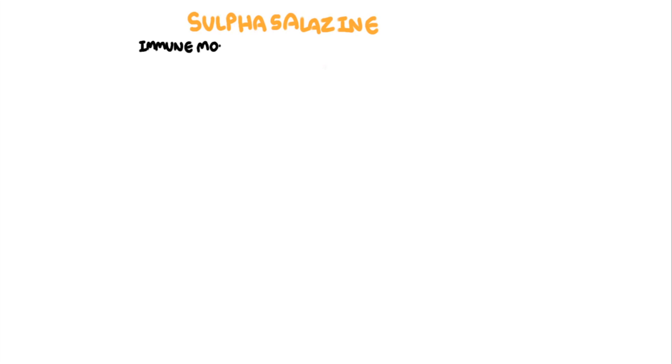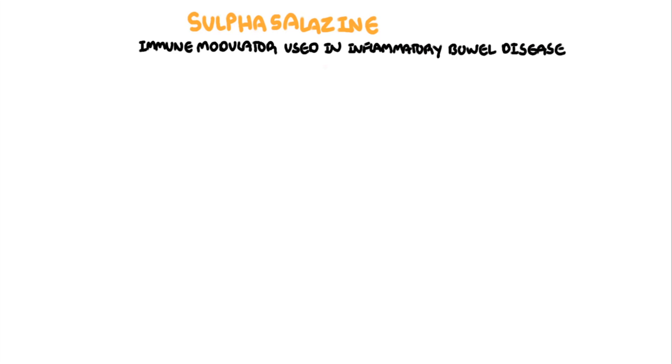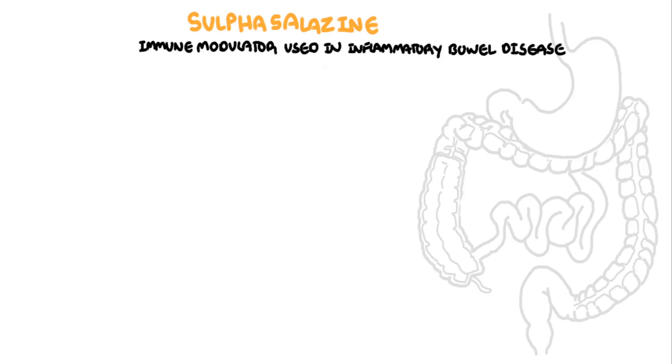Hello. In this video we're going to talk about another disease-modifying anti-rheumatic drug by the name of sulfasalazine. Sulfasalazine is an immunomodulator used to treat inflammatory bowel disease, rheumatoid arthritis, psoriatic arthritis, and peripheral spondyloarthropathies.